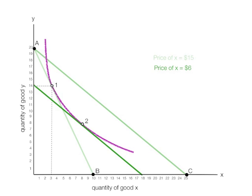That's where they consume at now. They consume 8 of Y and 8 of X. This is called the substitution effect, and in this case, it equals 5.